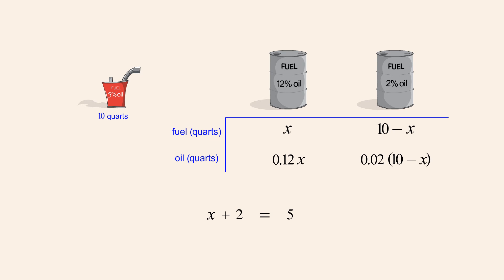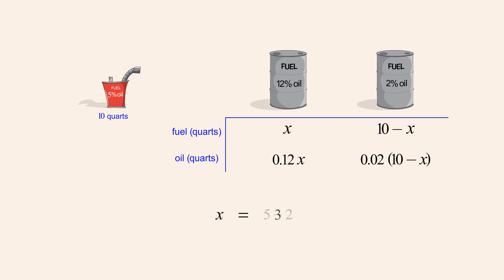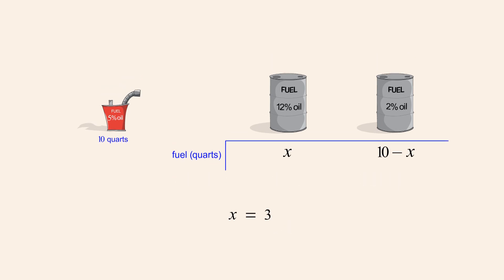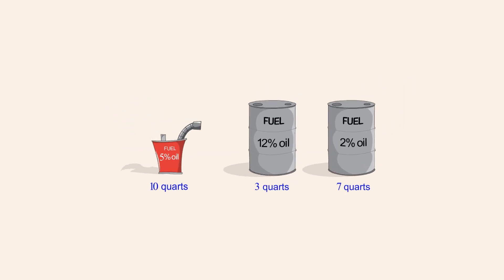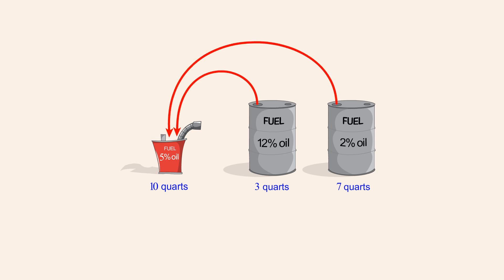Subtracting 2 from both sides of the equation allows us to cancel the positive and negative 2's on the left, leaving us with the equation x equals 5 minus 2, or x equals 3. We can now substitute this value for x into our table to find the quantity of fuel to take from each barrel. We see that the quantity to take from the 12% barrel is 3 quarts and the quantity to take from the 2% barrel is 10 minus 3, or 7 quarts. So by using algebra to calculate the quantities of the two fuel mixtures to combine, A.V. can complete his yard work.